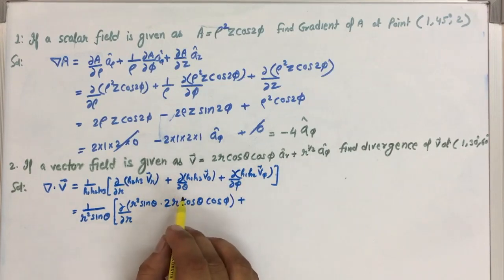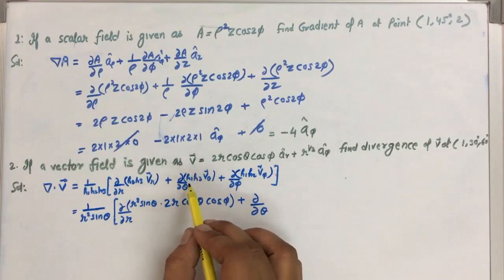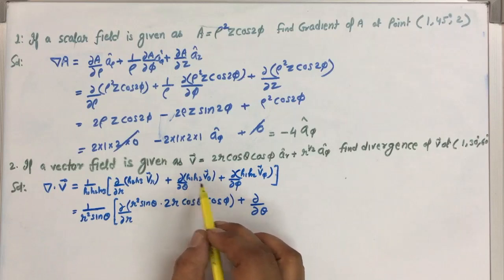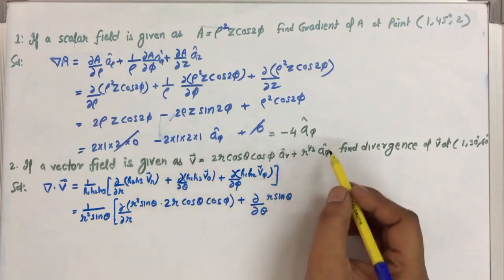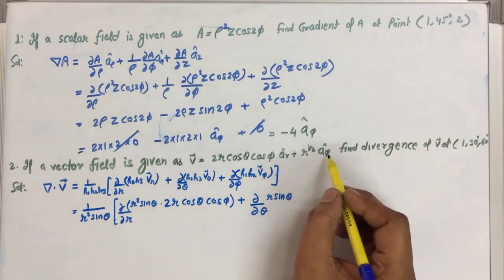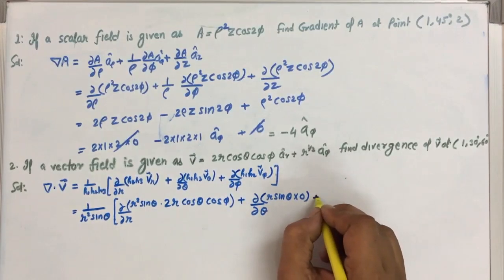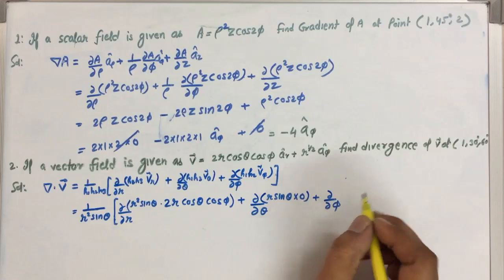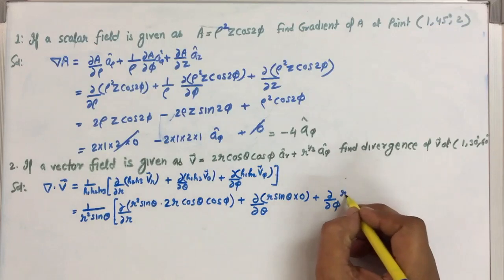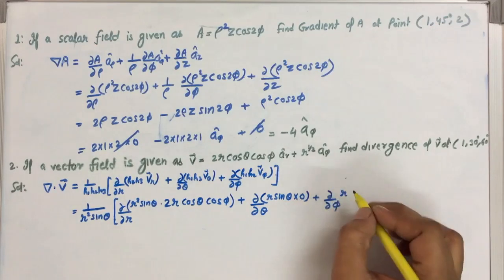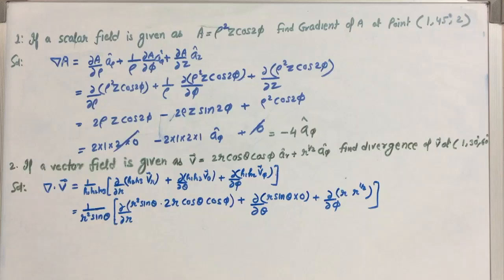The second term is del over del theta, where h1 = 1 and h3 = R sin theta. So we have R sin theta multiplied by V_theta. The V_theta component is 0 here, so that term multiplies to 0. For the phi term, h1 = 1 and h2 = R, giving us R times the V_phi component.